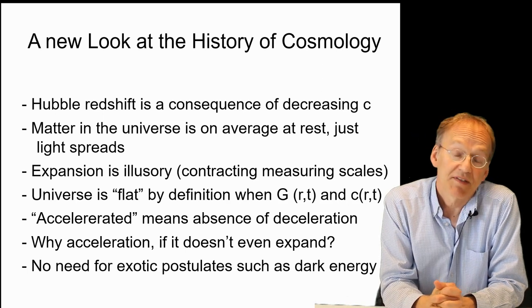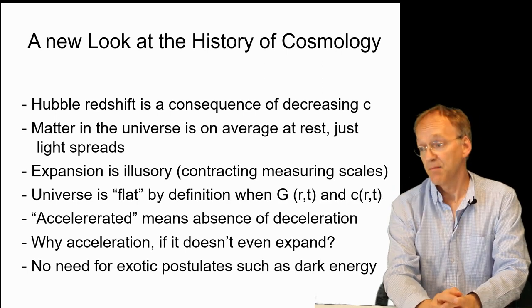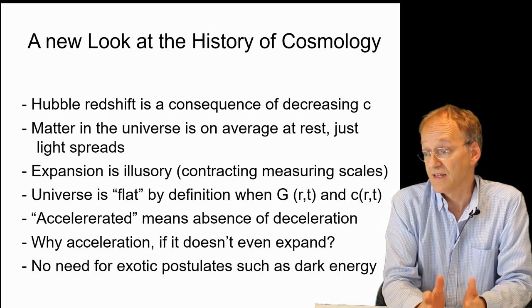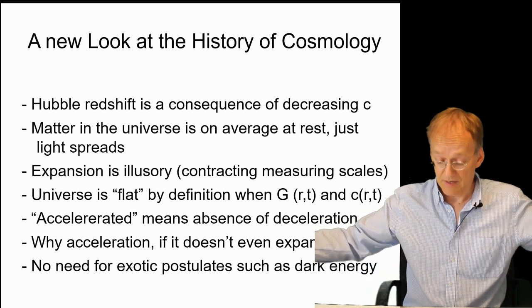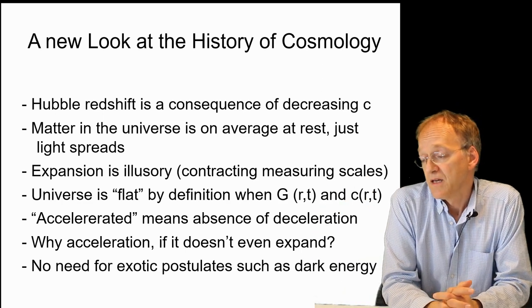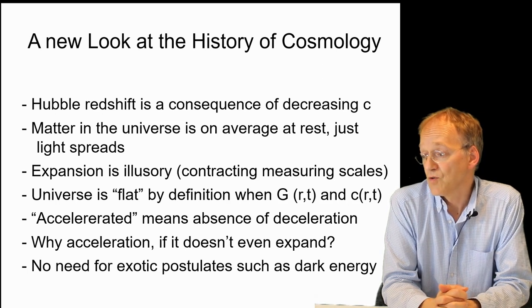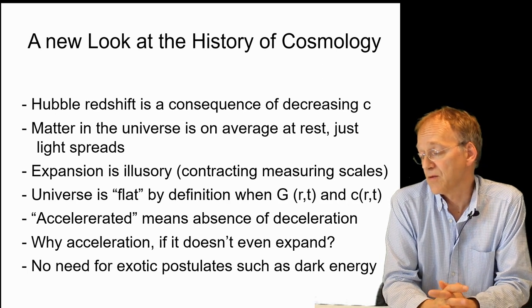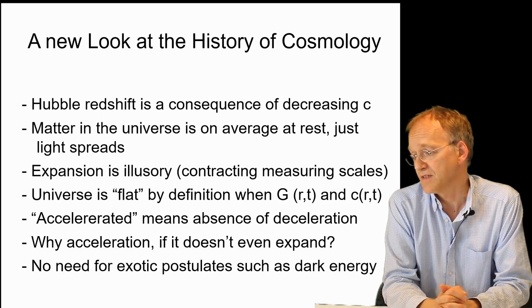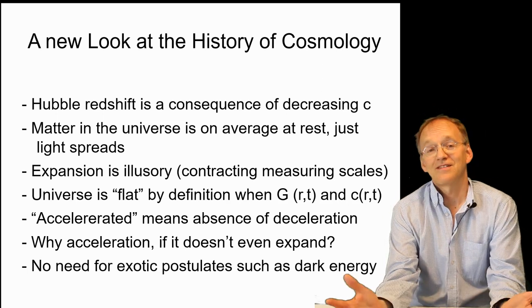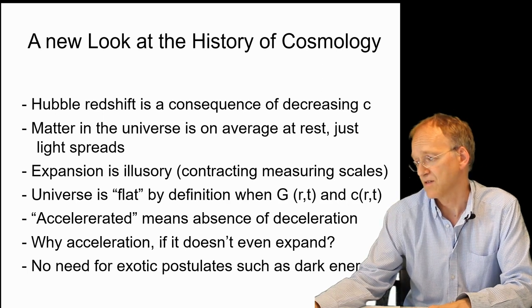We must take a new look at the history of cosmology. The Hubble redshift is simply a consequence of decreasing c. And this means that any matter in the universe is on average just light spread. This is the growth of the horizon, but not a material expansion. The expansion itself is illusory due to contracting measuring scales. The universe is flat by definition when we apply Mach's principle, and accelerated just means absence of deceleration. Why should there be an acceleration if it doesn't even expand? And you have no need for these exotic postulates such as dark energy.